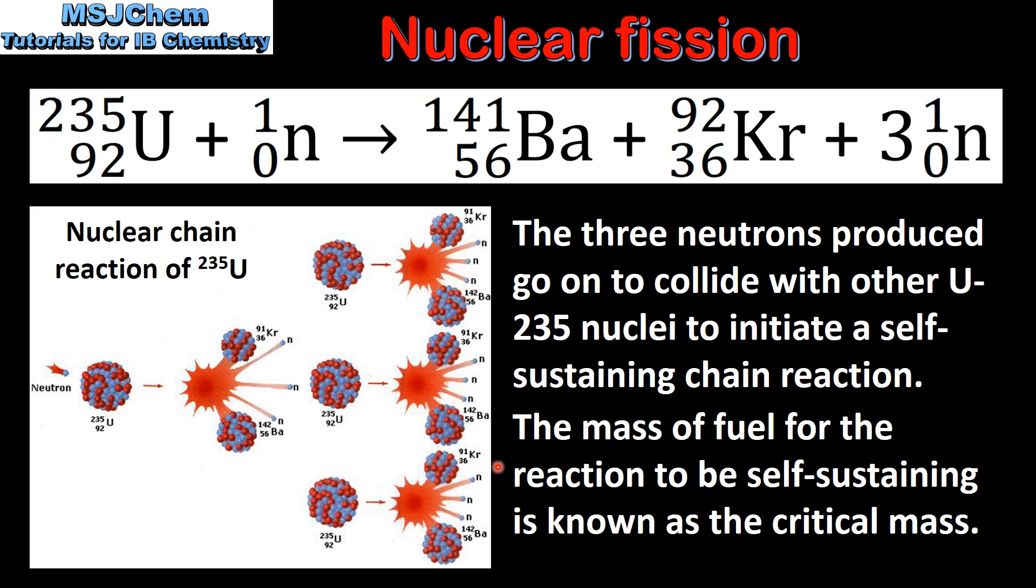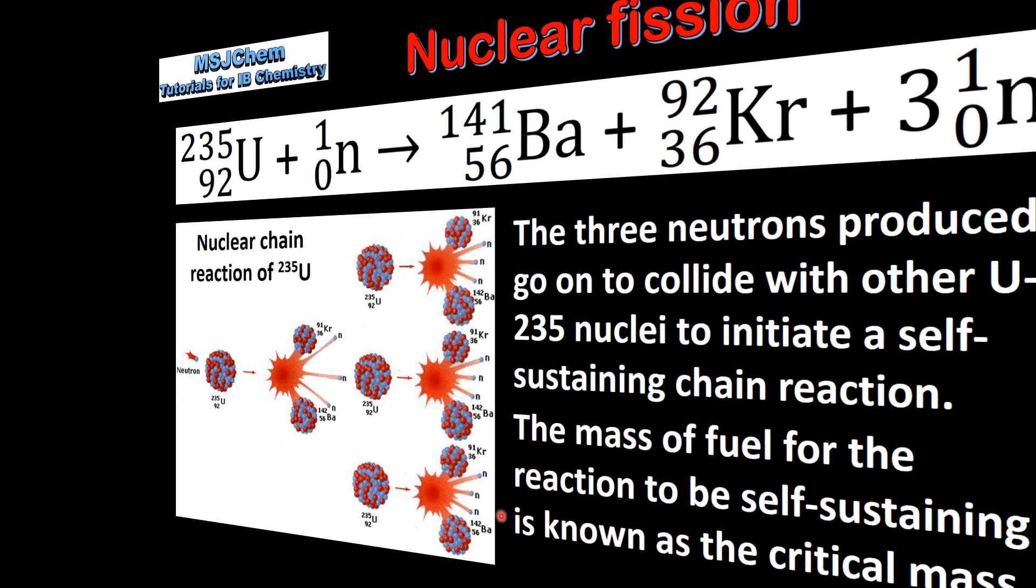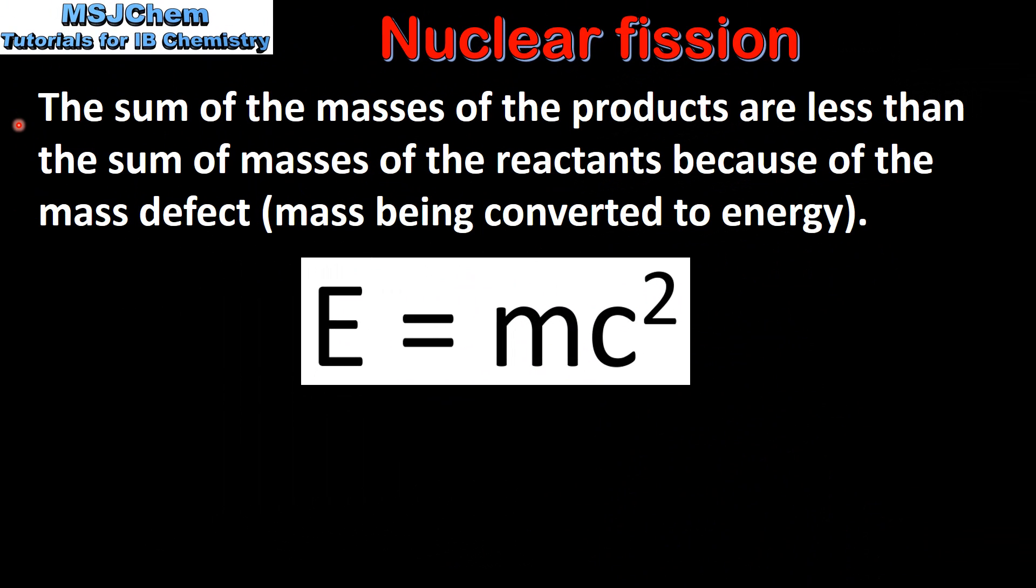In nuclear fission the sum of the masses of the products are less than the sum of the masses of the reactants because of the mass defect. The mass defect is where mass is converted directly to energy.